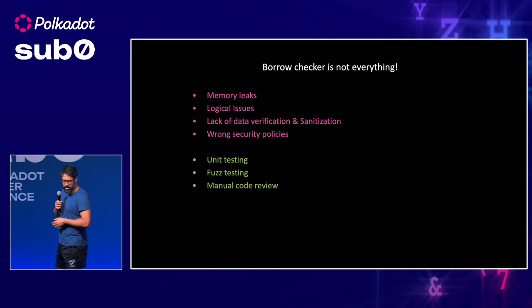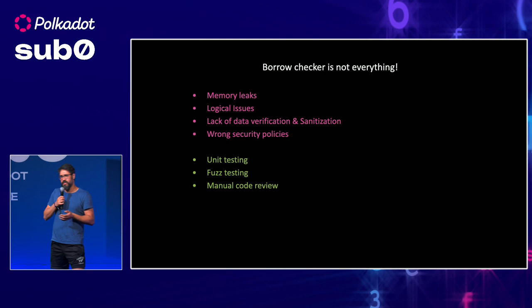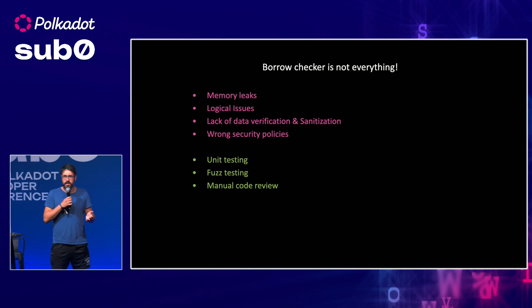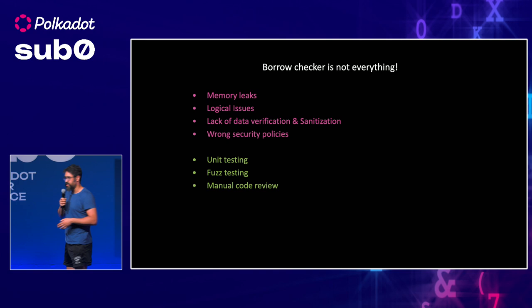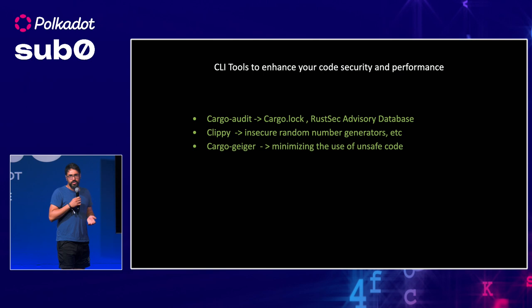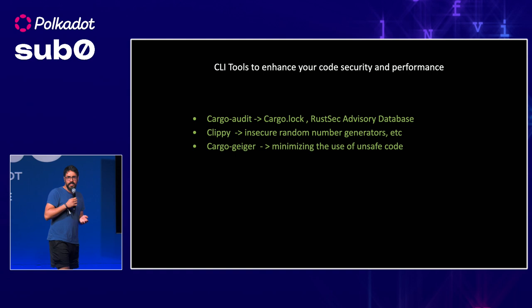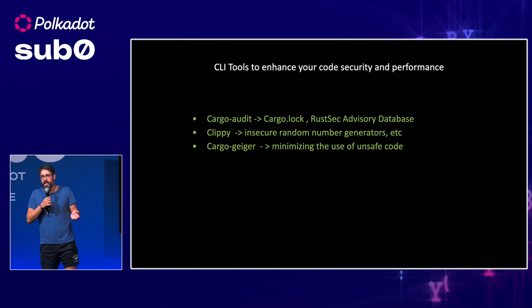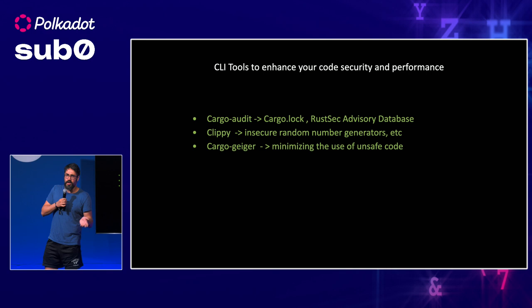Manual code review is very important because you might have logical problems that are complex and not necessarily memory safety related. In these scenarios you need an expert, or some tools, and a combination of them to analyze your code and figure out and report issues. There are a whole bunch of CLI, free open source tools that as a Rust developer you can use to enhance your code security. They don't necessarily require a background in security and can help enhance your security in a very short amount of time.